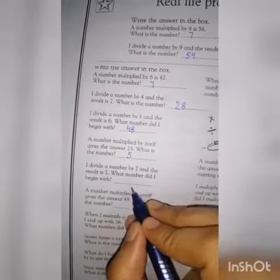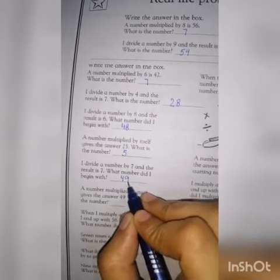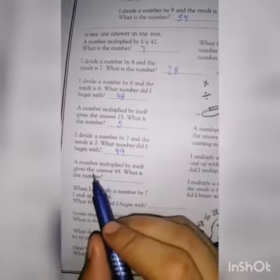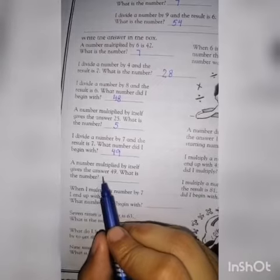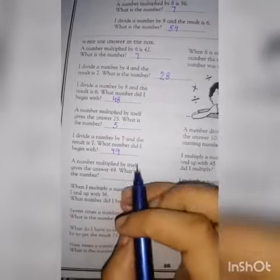So we have a number multiplied by itself and the answer is 49. What is the number?